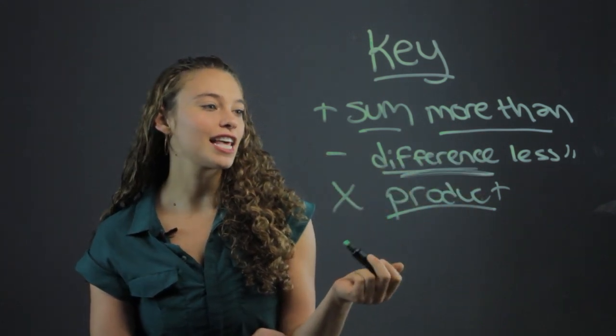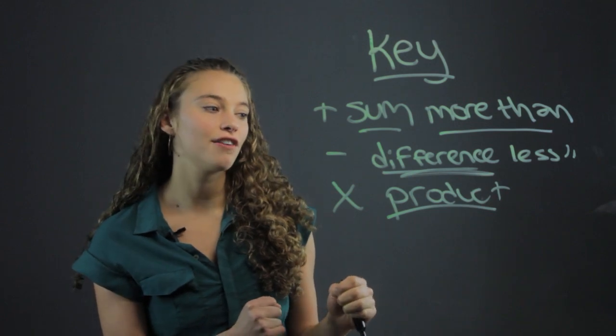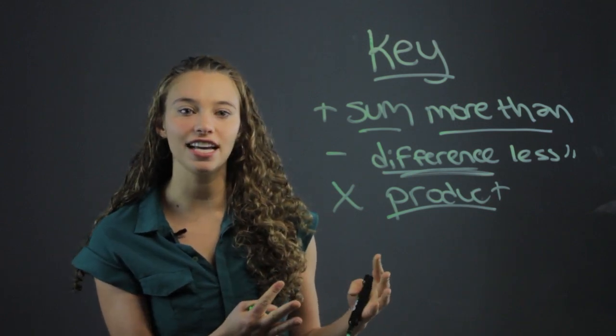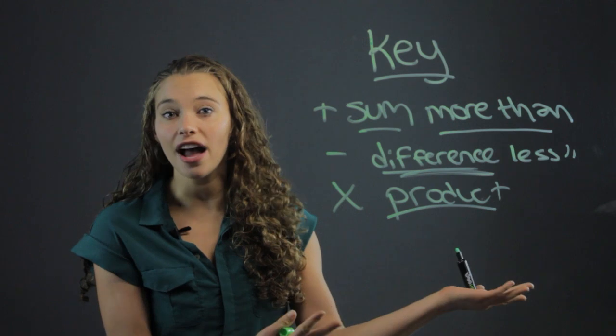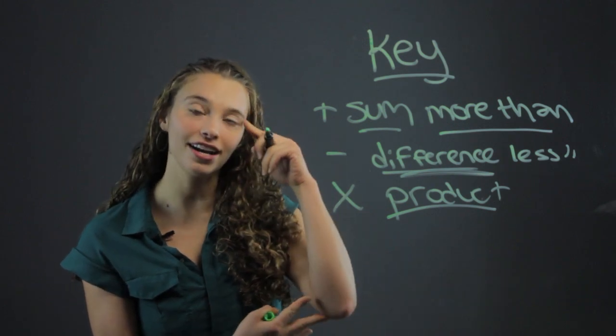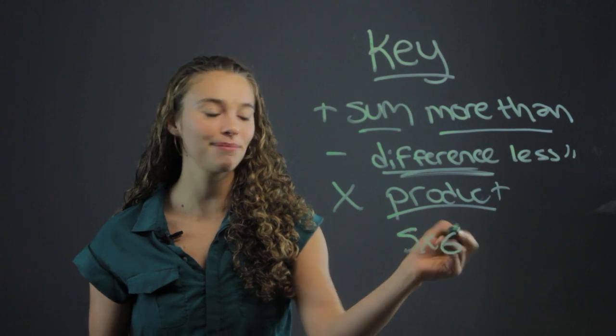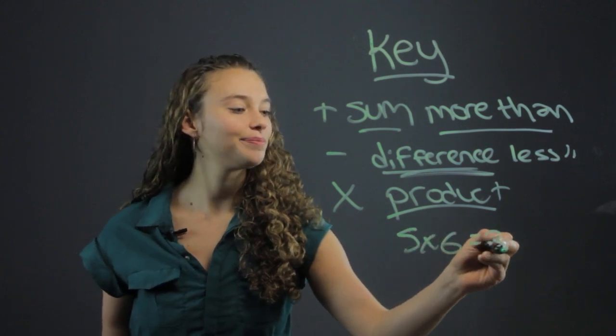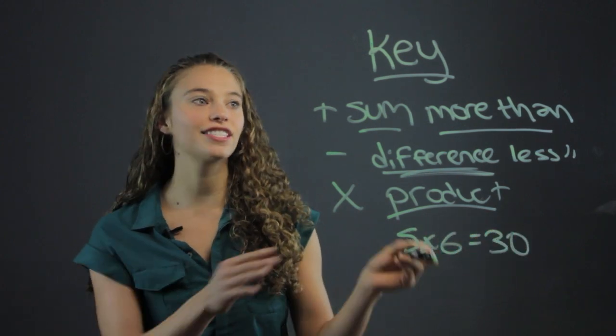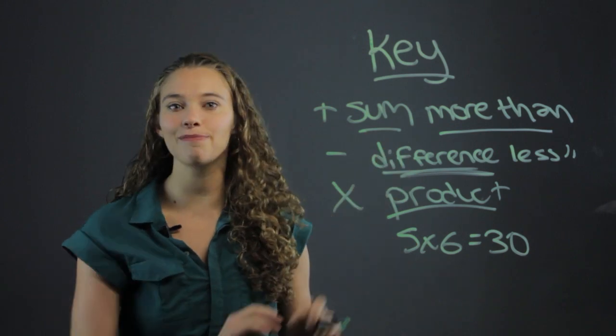You'll have things like the product of five and six is what? And you'll have to say, okay, product, that means multiplication. So the product of five and six, that just means five times six. Well, that's 30. And you can directly translate from a verbal sentence to a mathematical equation.